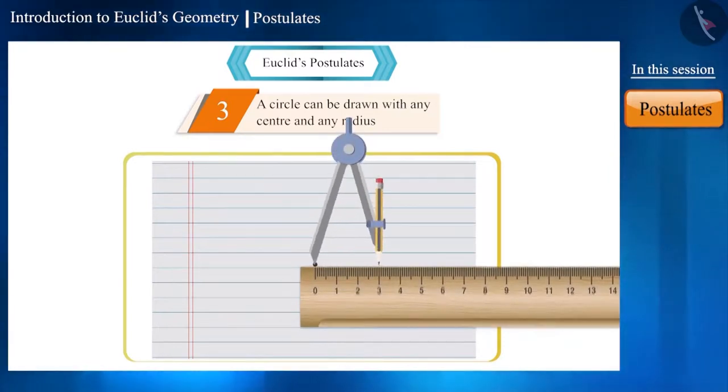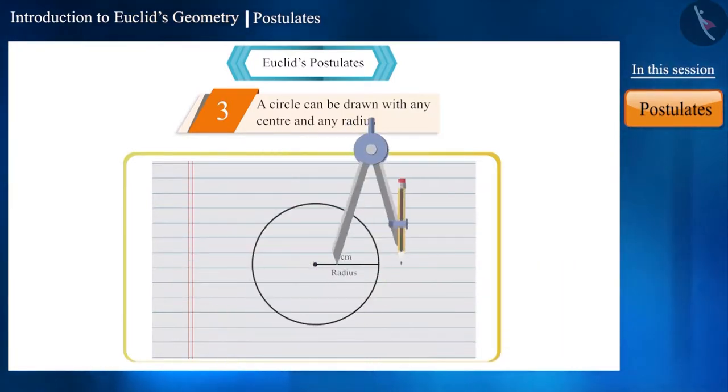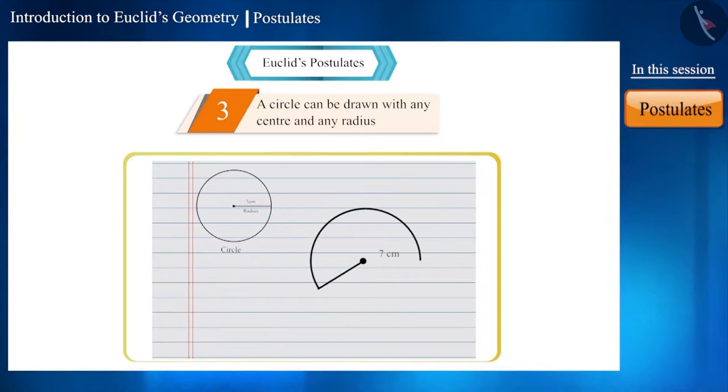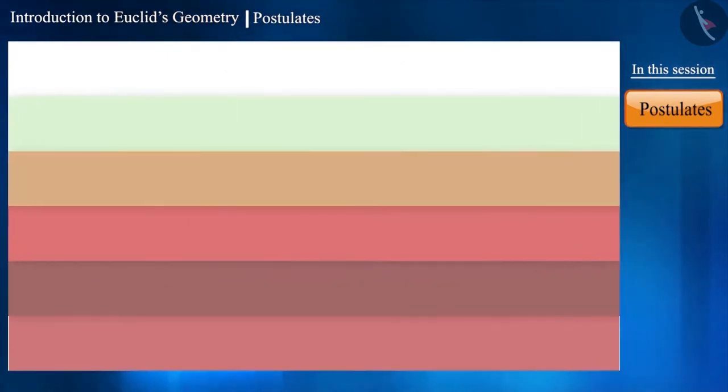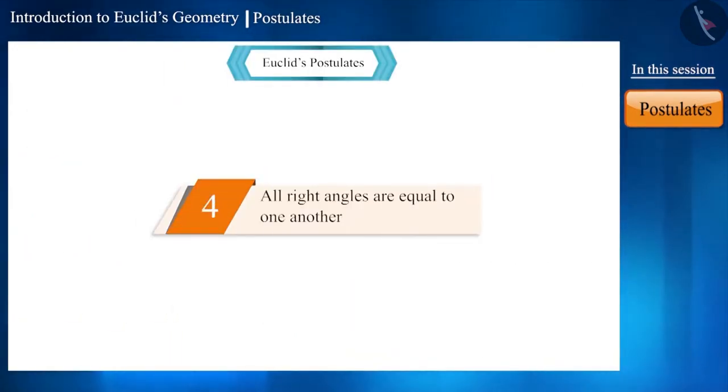We can see that we can draw infinite circles. Let's move to the next postulate. All right angles are equal to one another. Friends, this is quite easy to understand.